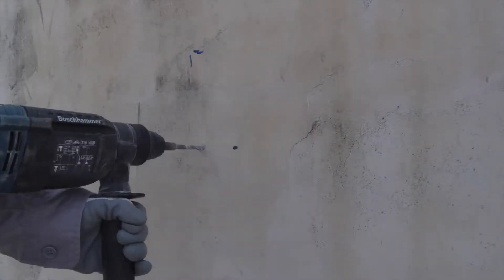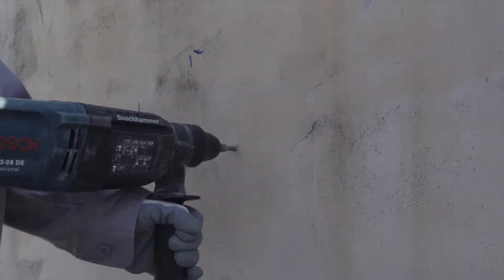Drill holes on the wall using an electric drill. The holes should fit the expansion bolts.